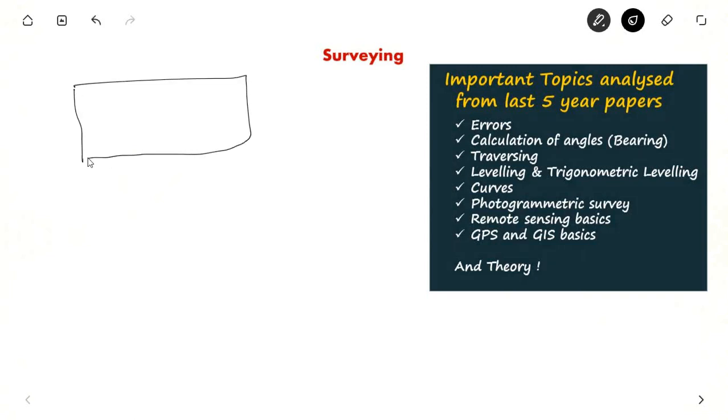Suppose you have an area and you want to determine the position of this point A. You will have two benchmarks here and you will try to fix the position of A like this. Here angle is involved and distance is involved. If A is at a height, even elevation is involved. Determining the relative position of points is surveying using angular and linear measurements.